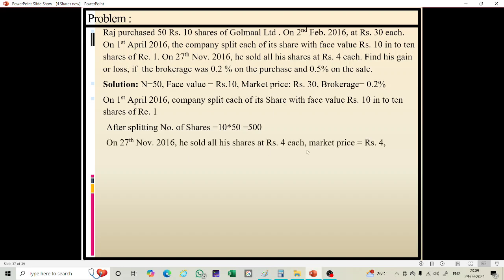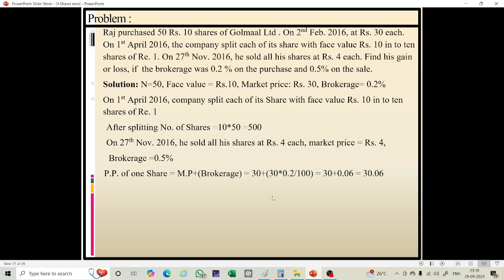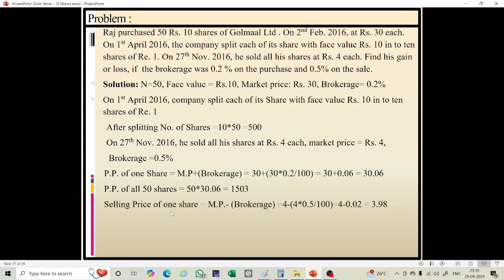After splitting, number of shares is 500. He sold all his shares at rupees 4 each; brokerage is 0.2 percent on purchase and 0.5 percent on sale. Purchase price of 1 share equals market price plus brokerage: 30 plus (30 into 0.2 upon 100) equals rupees 30.06. Purchase price of all 50 shares is 50 into 30.06, which equals rupees 1,503.